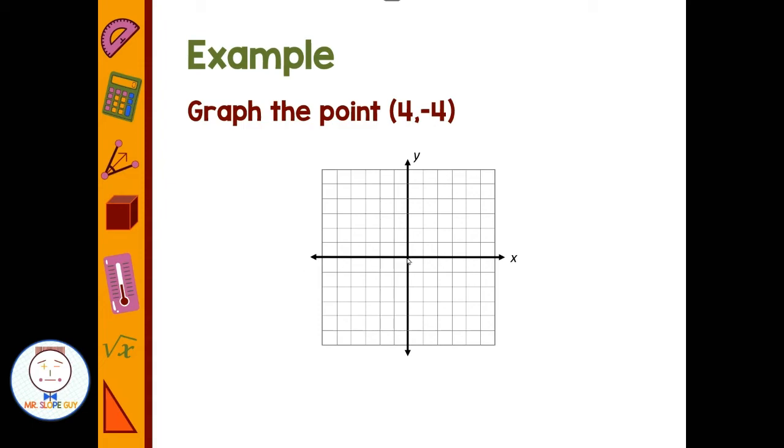And the second part, negative 4, from there I'm going to go down 4. Make both moves, put on my point, and that's my ordered pair at (4, -4).